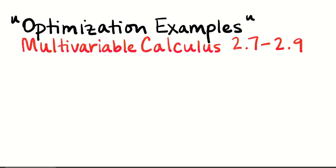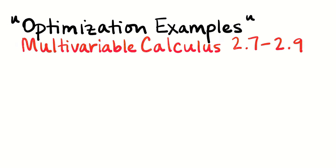In this video I'm going to be working on some optimization examples for multivariable calculus. I'm going to be going back and doing some problems from homeworks 27, 28, 29, and the notes. Some with constraints, some not, so I'll use Lagrange multipliers for some of them and some of them I won't need to. Let's just get to it.